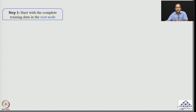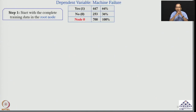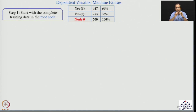The first step is to start with the complete training data in the root node. In our case, the root node is node 0, which has 700 observations. Out of these 700 observations, 447 is yes and 253 is no — meaning 64 percent of the time the machine failed and 36 percent of the time it did not. If you pick any machine randomly and ask what is the probability that it will fail, the probability would be 64 percent.